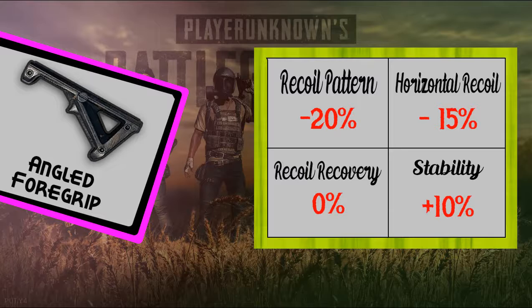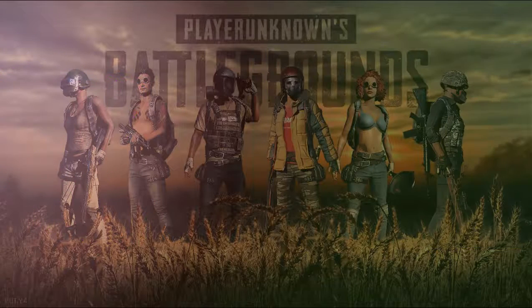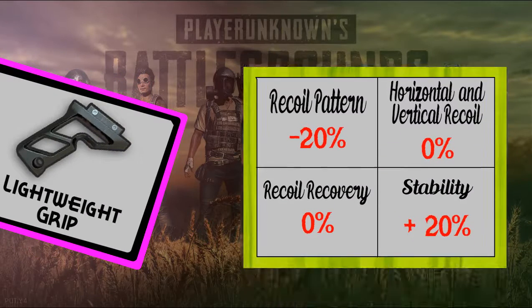Recoil recovery is the time taken by the gun to come back to its starting or original point after firing a shot. Stability increasing by 10% means it improves bullet grouping — for example, if you shoot 10 bullets with an M416, 6 or 7 bullets will hit the target. The lightweight grip reduces recoil pattern by 20% and does not reduce vertical or horizontal recoil, but massively increases stability by 20%.